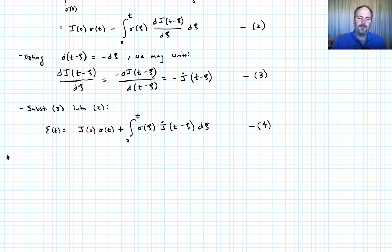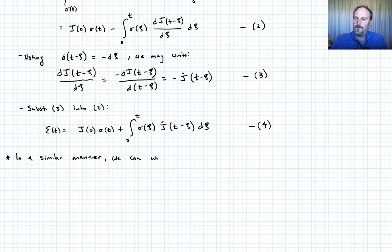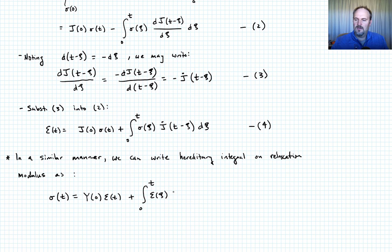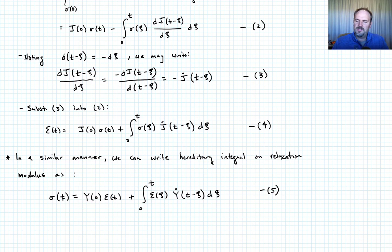We can say something similar about the relaxation modulus. In a similar manner, we can write the hereditary integral for the relaxation modulus as: sigma of t equals Y of 0 — the relaxation modulus evaluated at 0 — times epsilon of t, plus the integral from 0 to t of epsilon(xi) times Y-dot(t minus xi), d xi. That's the reformatting of the hereditary integral — this is an equivalent form.